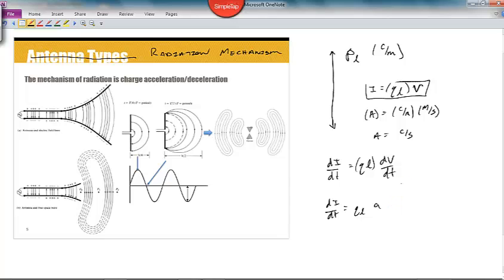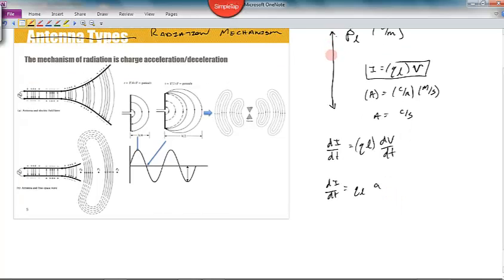And so if instead of being infinite wire, it's of length L, we just say that dl di dt equals l times q sub l times a.